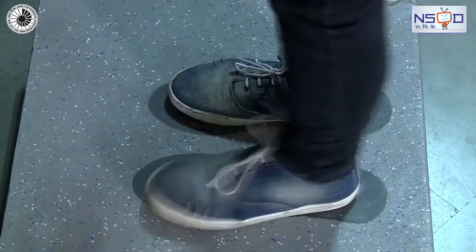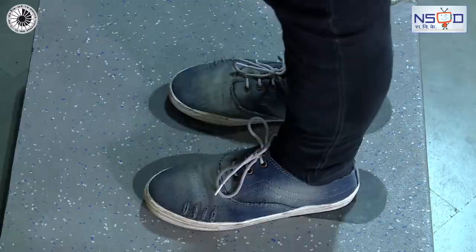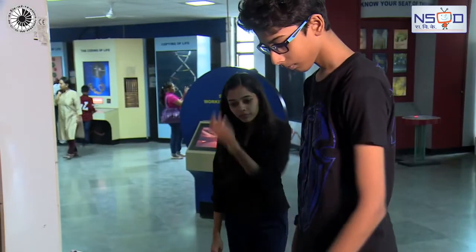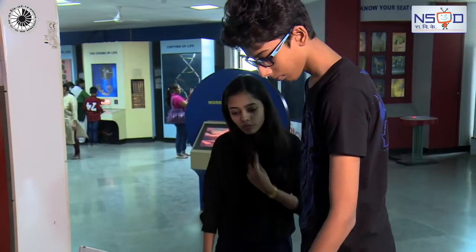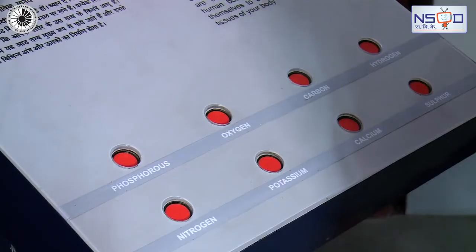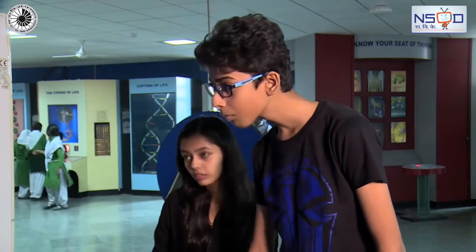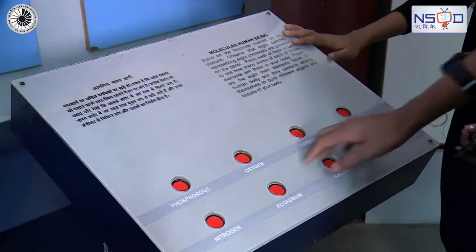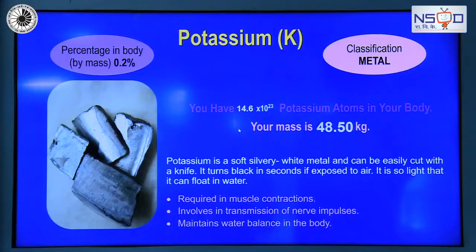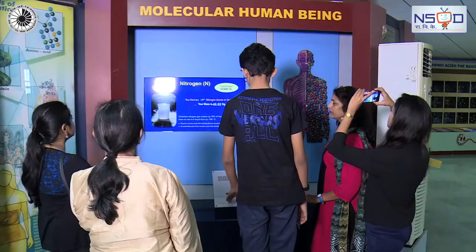Stand on the footprints marked on the platform. Observe that 8 switches representing 8 elements are provided on the panel. Press each of them in turn to see how many atoms of each of these elements are there in your body.